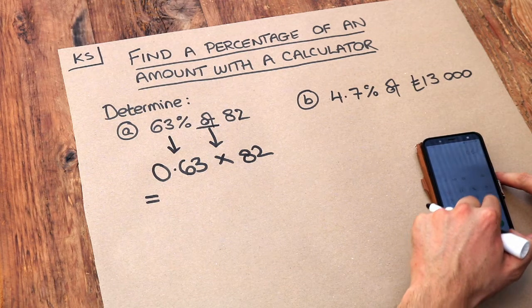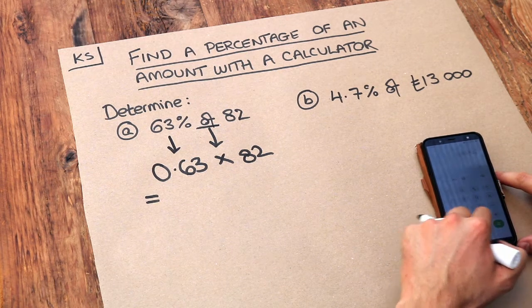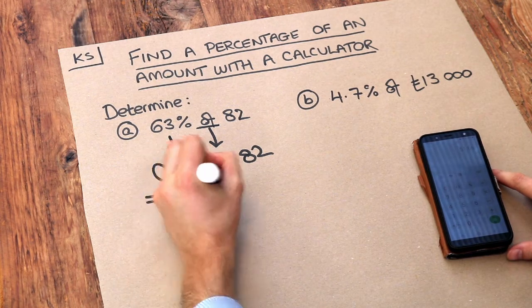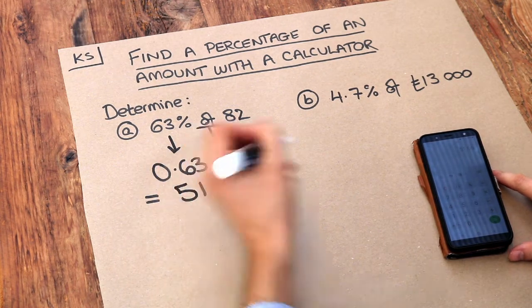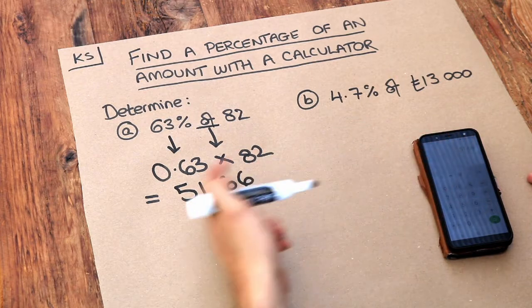So 0.63 multiplied by 82, and that gives you 51.66. Now I said I expected the value to be a bit more than 41, and indeed it is.